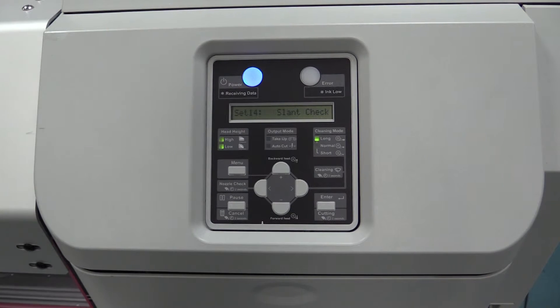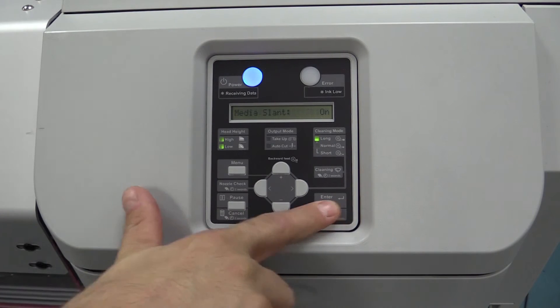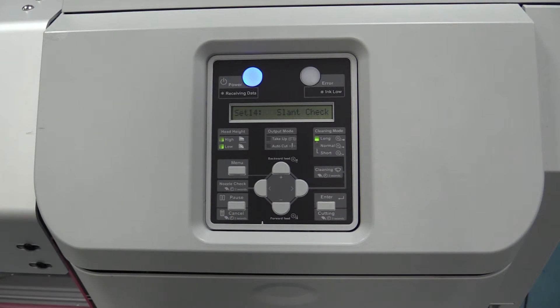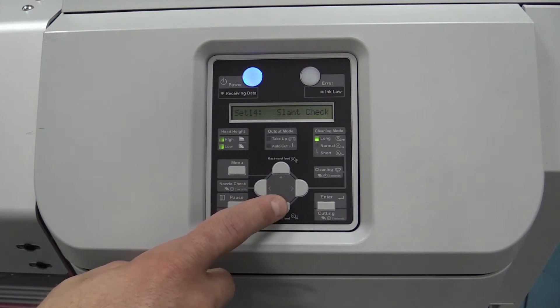Setting 14 is slant check. This is a safety you can turn on or off that will tell you whether your media is starting to skew as it feeds. If it slants outside of your 5 millimeter edge tolerance, it'll stop and won't print any further. It helps minimize any possible scrap. I would recommend leaving that on at all times.